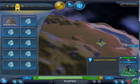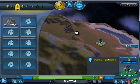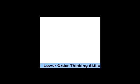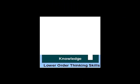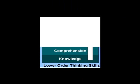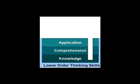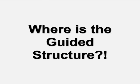Spore allows users to design and develop personalized gaming experiences, but are they limited to realizing only Bloom's lower order of learning levels — knowledge, comprehension, and application — if a guided structure is not provided?